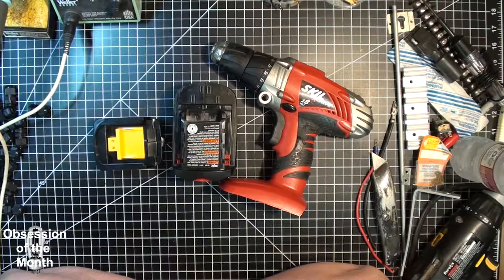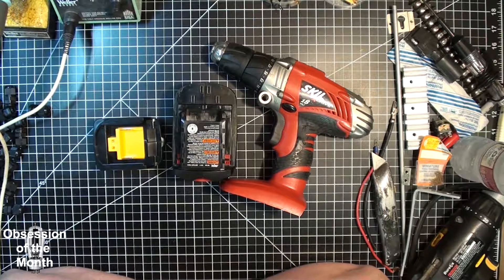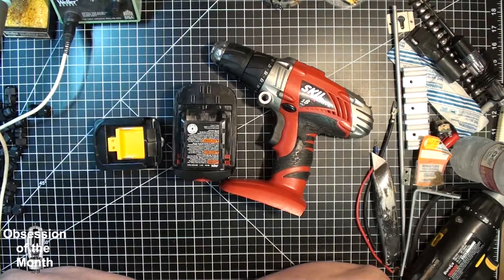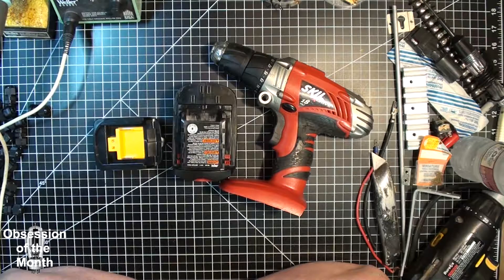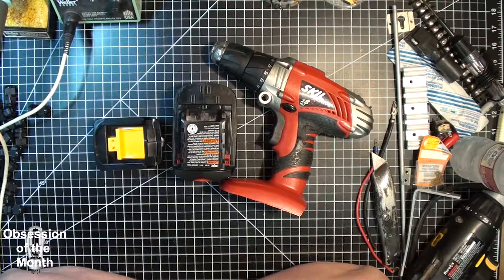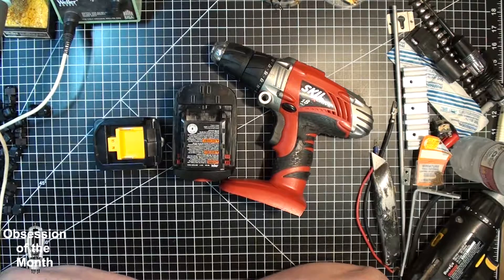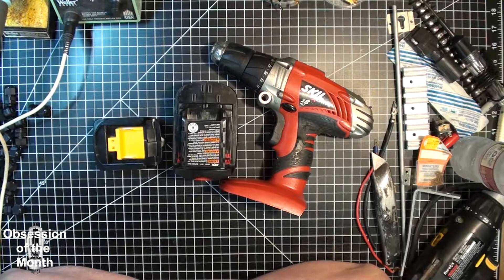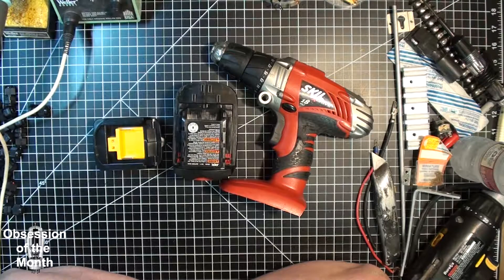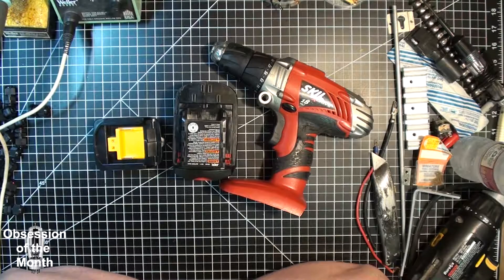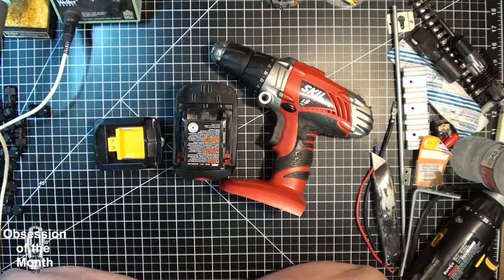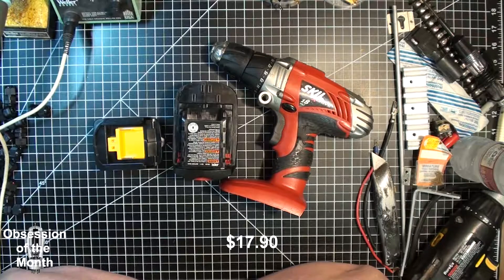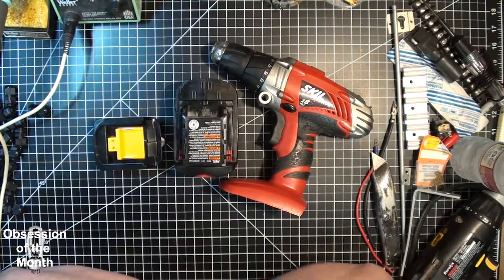So, finally, someone posted an auction for a drill with the battery, listed as unknown if it worked. I didn't care, because I really just wanted this battery, and I won the auction, and it was like $4.50 plus shipping, which ended up being about maybe $19, $20 for the battery and the drill.